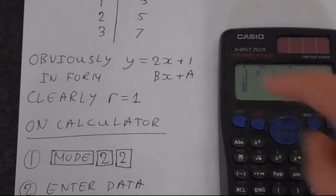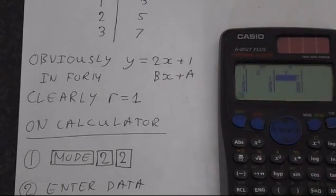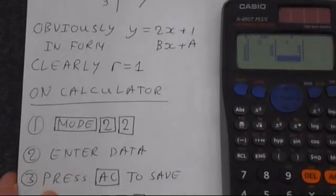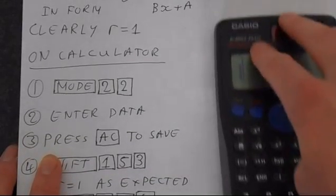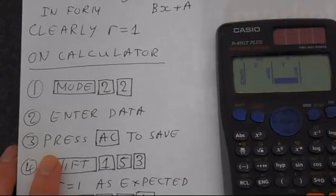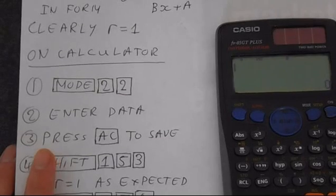And then we can just go down the y column entering it rather than going back and forward. So we've got 3, 5, and 7. Okay, so that's our data entered. Like before, we're going to press the AC button to save. So just press AC, that's saved to memory.